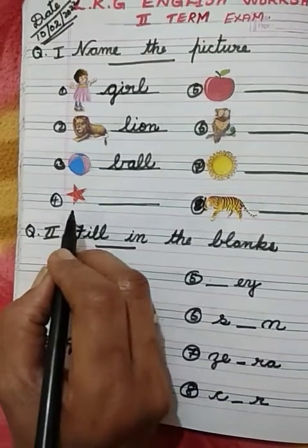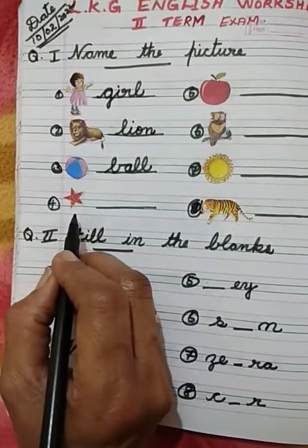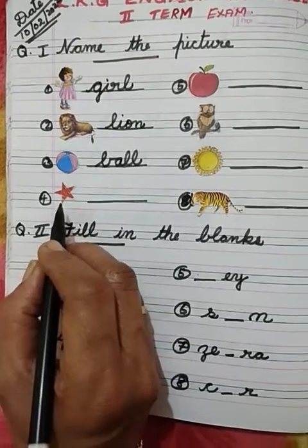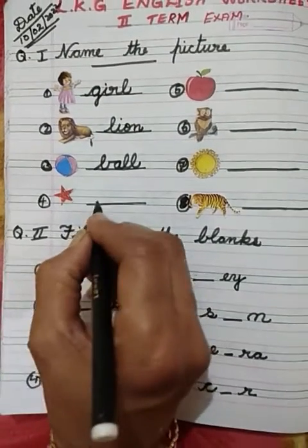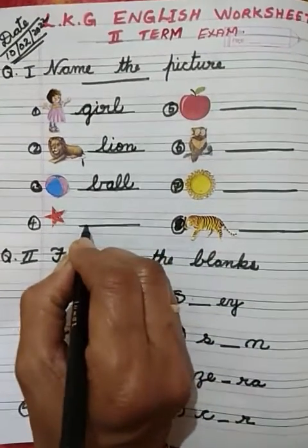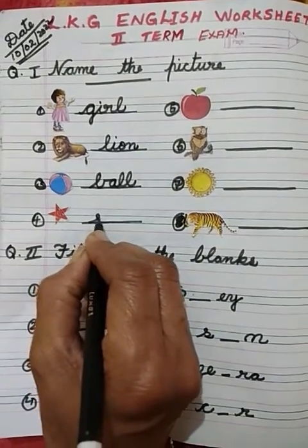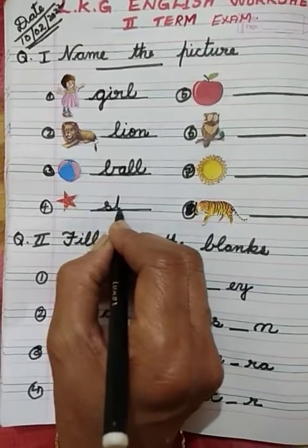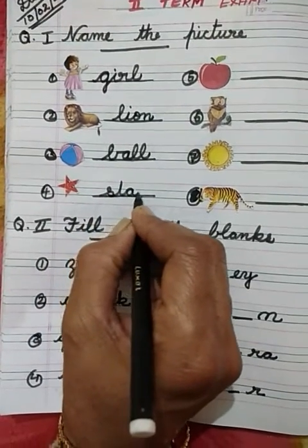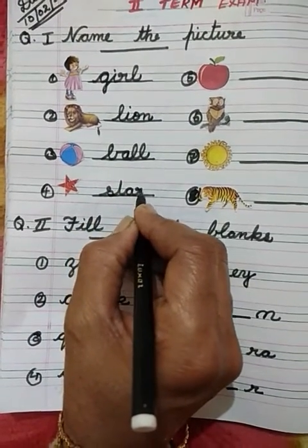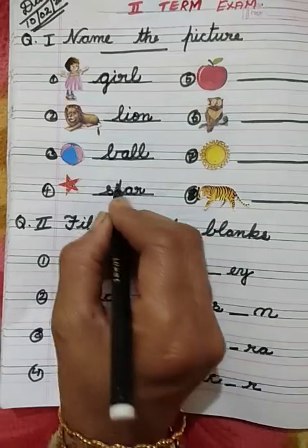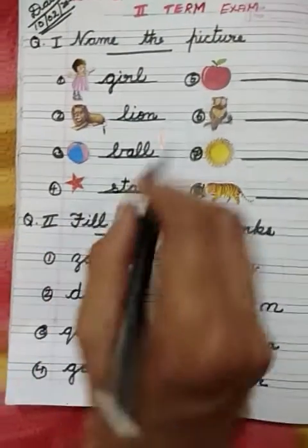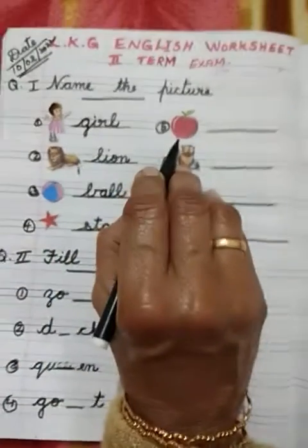First we will identify the picture. What is this? Star! Then write here the spelling of star: S-T-A-R. Star. Number 5.